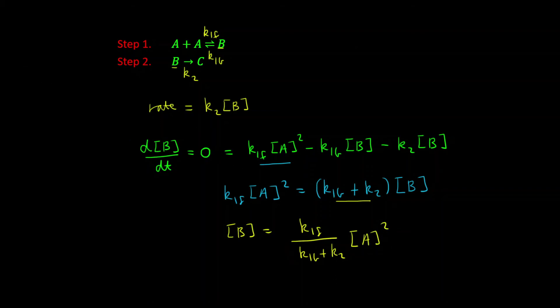And now if we substitute for B in our rate law, what we get is K2 multiplied by K1F over K1B plus K2, and that's all multiplied by the concentration of A squared.